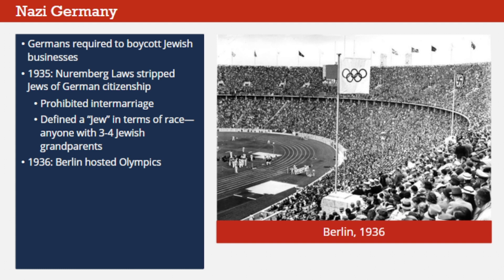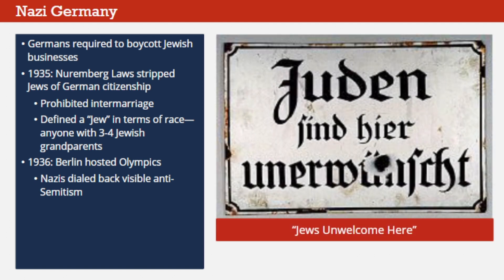In 1936, Berlin hosted the Olympic Games, and Germany played host to many foreign visitors. In order to avoid criticism, the Nazis dialed back some of their most visible anti-Semitic practices. Signs saying 'Jews unwelcome here'—a common sight in public spaces before the Olympics—were removed. Still, the Nazis did not allow Jewish athletes to represent Germany in the Games, and after the Olympics were over, the persecution resumed, even worse than before.